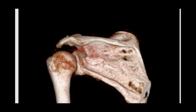The last muscle posteriorly is the teres minor, which originates from the middle half of the lateral border of the scapula. It's a smaller muscle and the muscle belly blends in with the infraspinatus. It courses and inserts on the greater tubercle, but more inferiorly. The infraspinatus and teres minor, pulling on the greater tubercle in this fashion, are going to externally rotate the humerus.